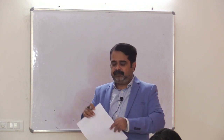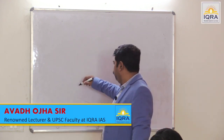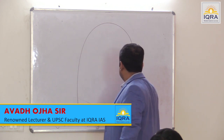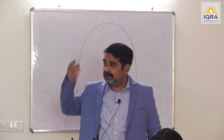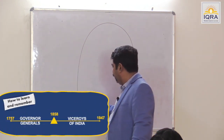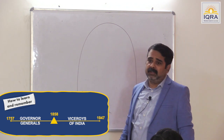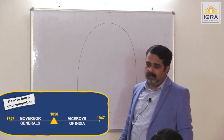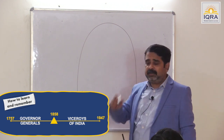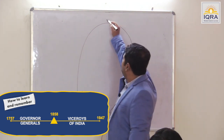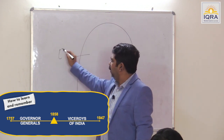We will start the second paper: Viceroys and Governor Generals — very important. How to prepare these governor generals from 1757 to 1947, almost 200 years. The formula you have to apply is to divide modern India into two parts: this part — East India Company.